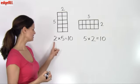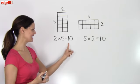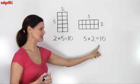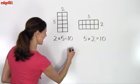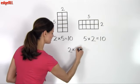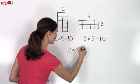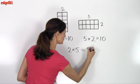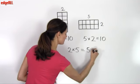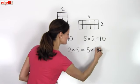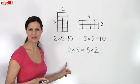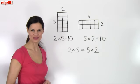So two times five equals 10, and five times two equals 10. So we can say that two times five is equal to five times two. And that's the commutative property of multiplication.